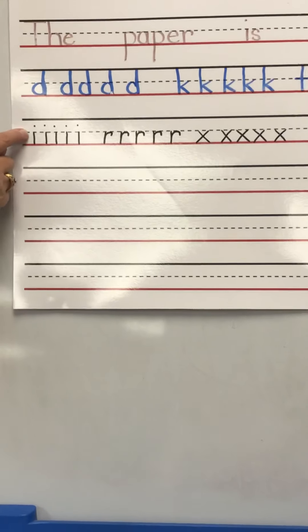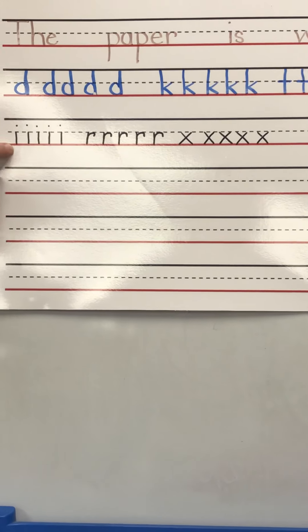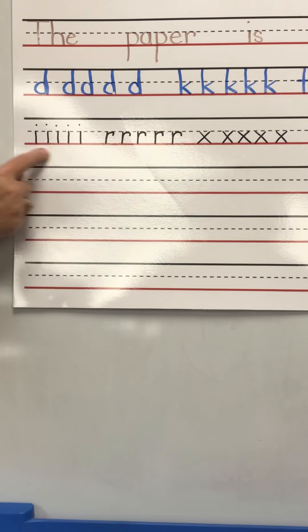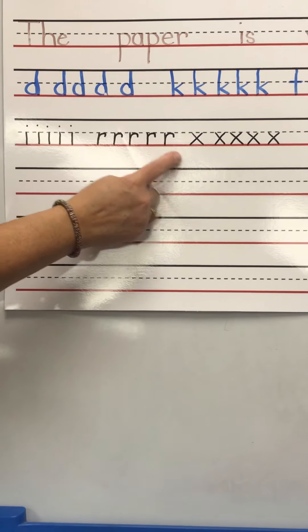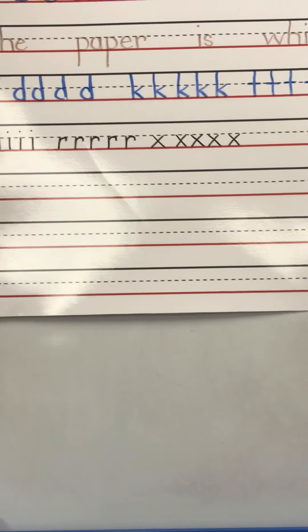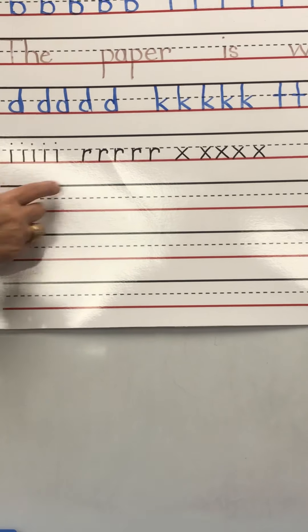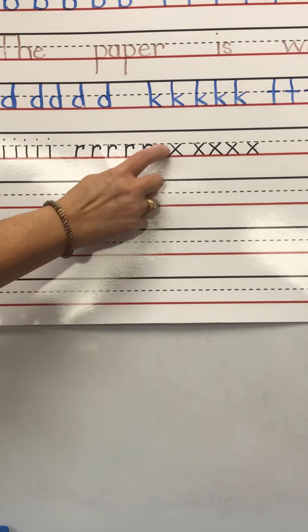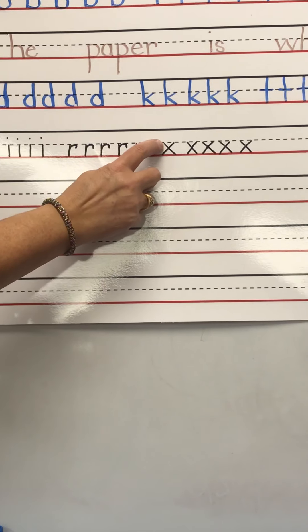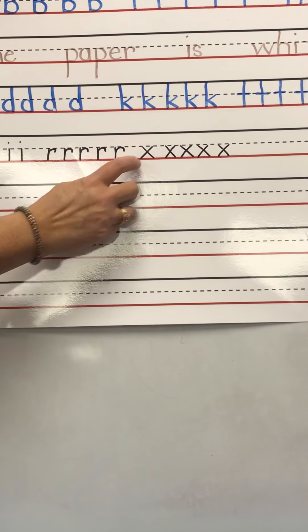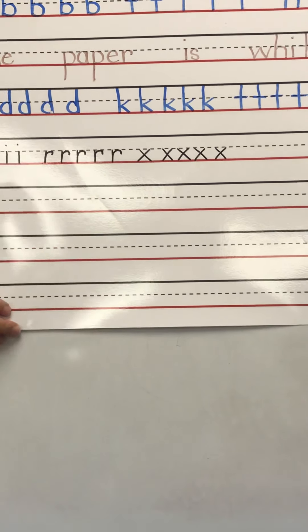So the letters we practiced today are all small letters. They all start on the dotted line and they end on the red line: I, R, X. Start on the dotted line, go down to the red. Start on the dotted line, go down to the red, back up. Start on the dotted line, slant to the red, back to the dotted line, slant to the red.